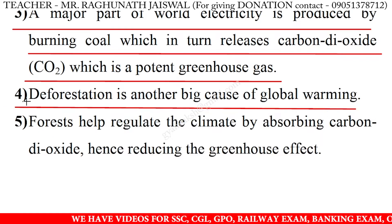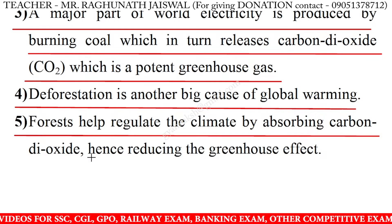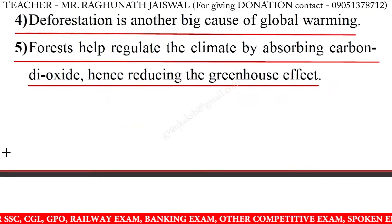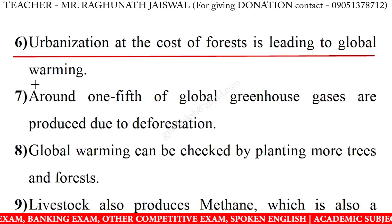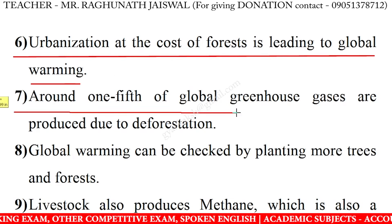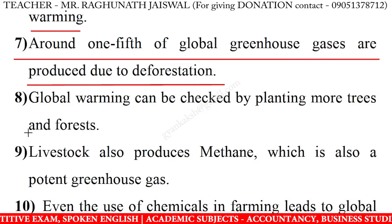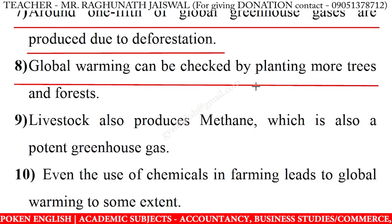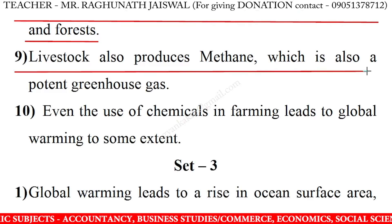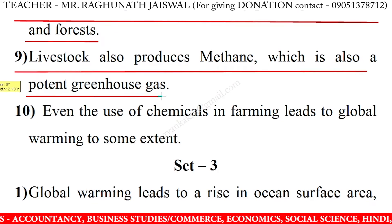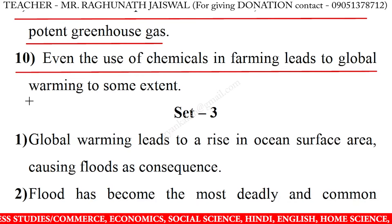Deforestation is another big cause of global warming. Forests help regulate the climate by absorbing carbon dioxide, hence reducing the greenhouse effect. Urbanization at the cost of forest is leading to global warming. Around one-fifth of global greenhouse gases are produced due to deforestation. Global warming can be checked by planting more trees and forests. Livestock also produce methane, which is also a potent greenhouse gas. Even the use of chemicals in farming leads to global warming to some extent.